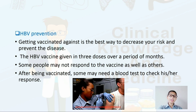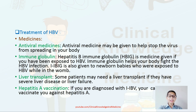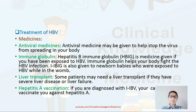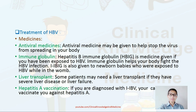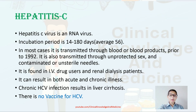Treatment of hepatitis B includes antiviral medicines to help stop the virus from spreading in the body. Immunoglobulin is a medicine given if you have been exposed to HBV; it helps the body fight the HBV infection and is also given to newborn babies exposed to hepatitis B in the womb. Some people may need a liver transplant if they have severe disease or liver failure. If diagnosed with hepatitis B, the caregiver may also vaccinate the patient against hepatitis A.